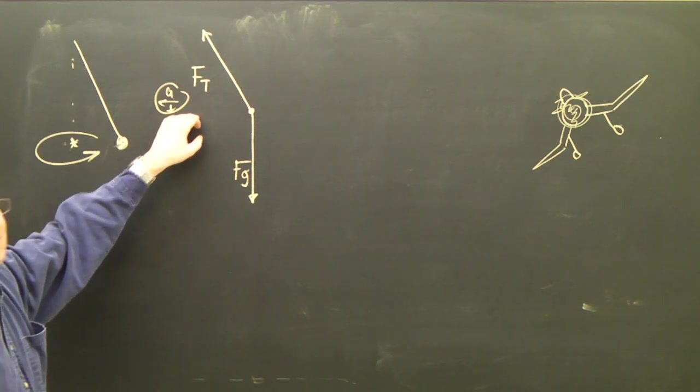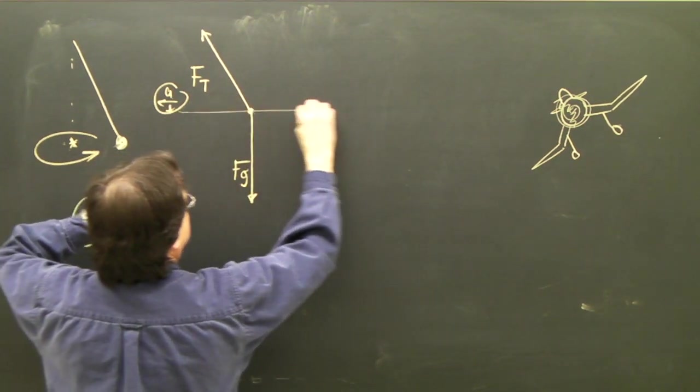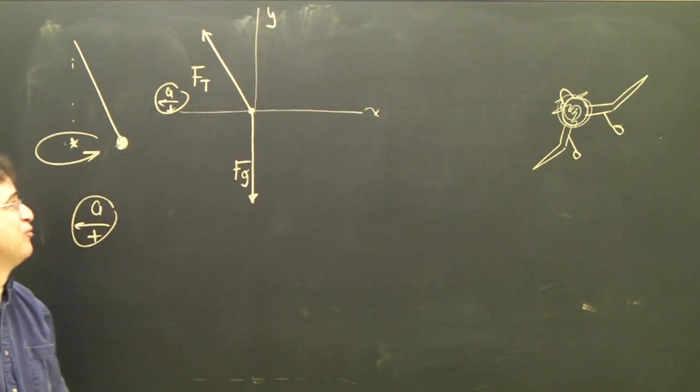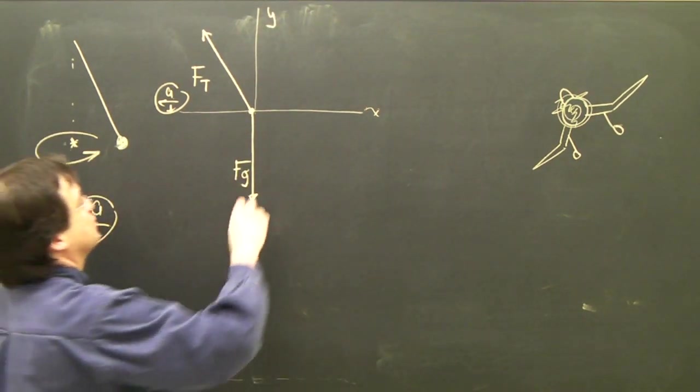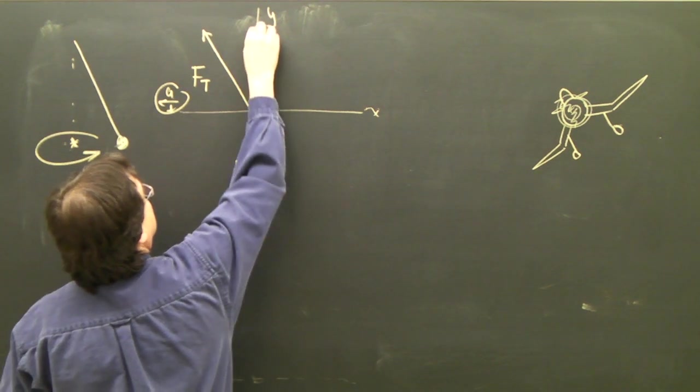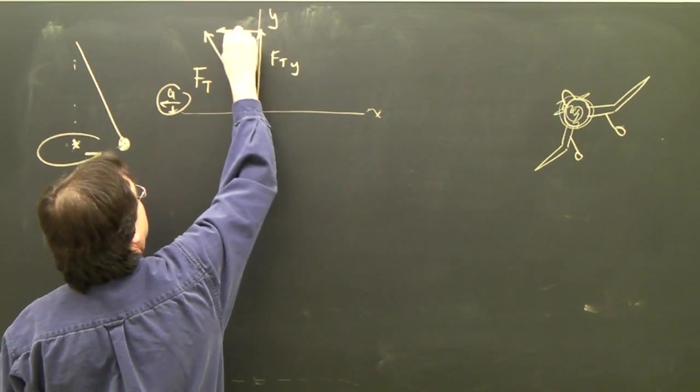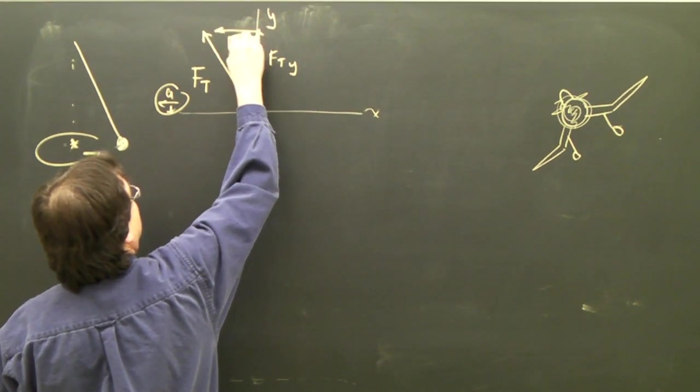If this is accelerating that way, then I make my x-axis along here, and my y-axis along there. And we add up all the forces in the x-direction, so we've got to split this up into components like this. This becomes ft,y, ft,x.